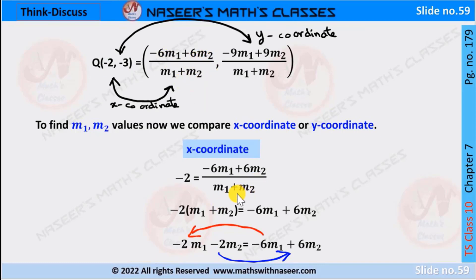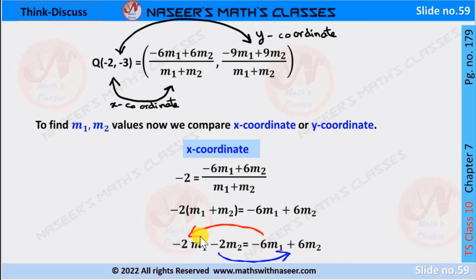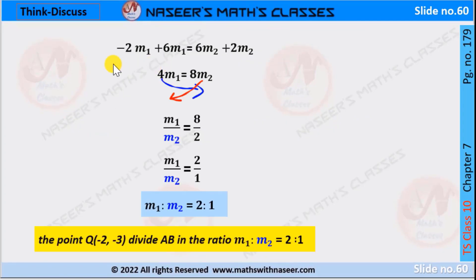Now we transpose M1+M2 from denominator to LHS, then −2(M1+M2) = −6M1 + 6M2. By using distributive law we can write −2M1 − 2M2 = −6M1 + 6M2. Now we transpose −2M2 from LHS to RHS and −6M1 from RHS to LHS. After transposition: −2M1 + 6M1 = 6M2 + 2M2. Simplifying, we get 4M1 on the LHS and 8M2 on the RHS.